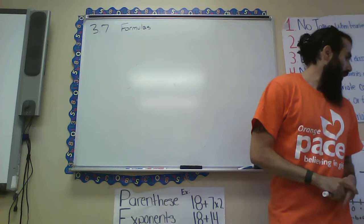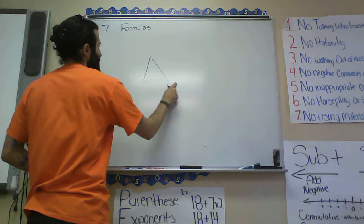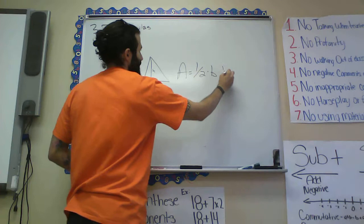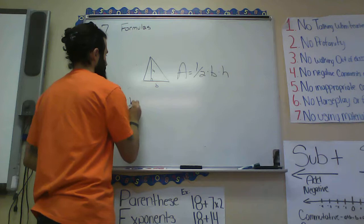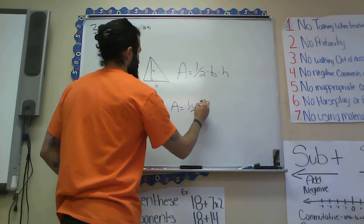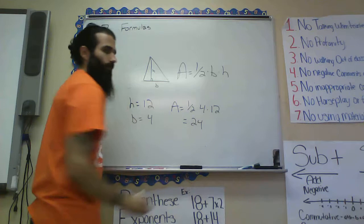The next example is a geometry formula: the area of a triangle. Area equals one-half times base times height. If they told you the height is 12 and the base is 4, you plug in: area equals one-half times 4 times 12, and you'd get 24.